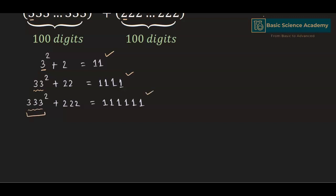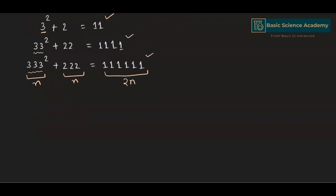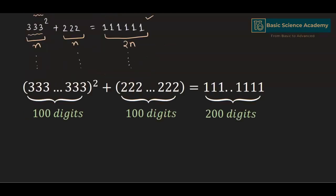Hence, for n number of digits in each number, we have 2n number of 1s. In a similar way, we can find that the sum of 100 digits of each will equal 200 digits of 1. Hence, this is our x, in which we have 4 ones at the end.